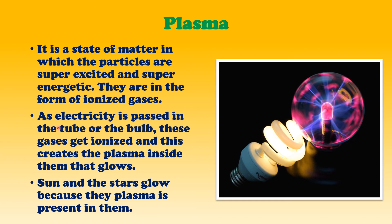When electricity is passed in tube lights and bulbs, the gas inside gets ionized, creating a plasma state inside them, and they glow. So when we switch on a tube light or bulb, electricity flows through the gas, converting it into the plasma state. Plasma glows, which is how tube lights work. Stars like the Sun also glow because they have plasma present in nature — we have it in smaller form in tube lights and bulbs.